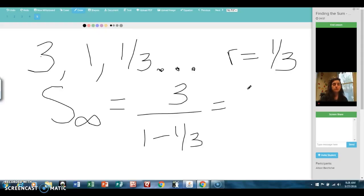So that's going to be 3 over 2 thirds. My final answer is 9 halves. So if we were to add all the terms of this series from 3 to infinity, the sum would be 9 halves.